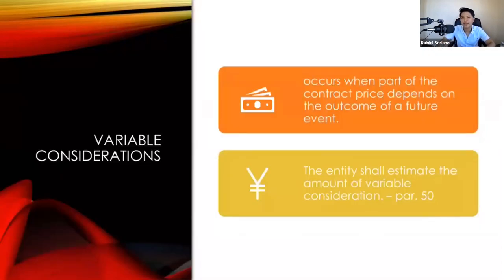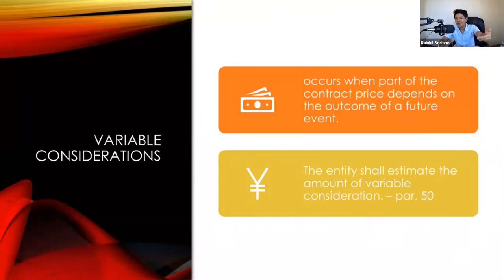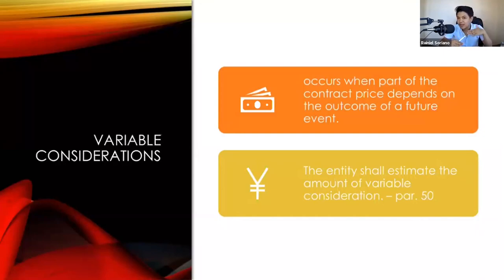Variable consideration occurs when part of the contract price depends on the outcome of a future event. For example, the transaction price might be 100,000 if you finish a project in two years, 120,000 if you finish in one and a half years, or 300,000 if you finish in one year. As you can see, the transaction price varies depending on the outcome of a future event.